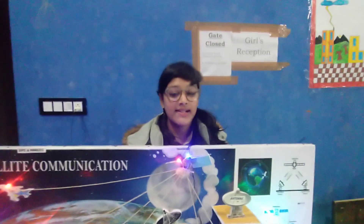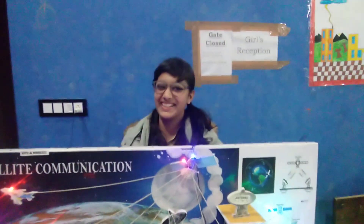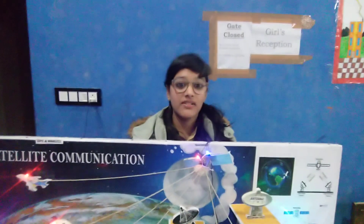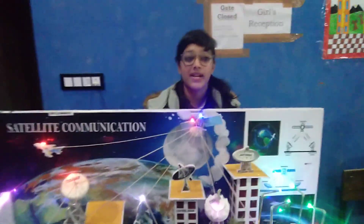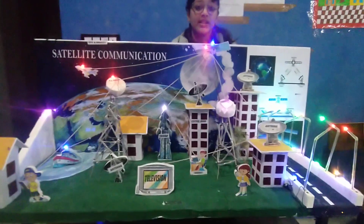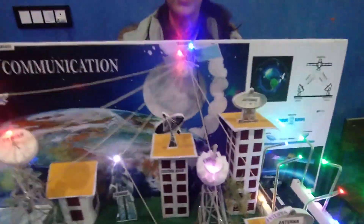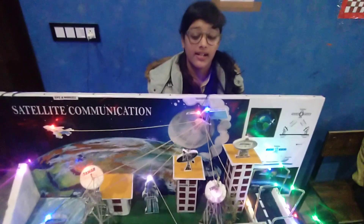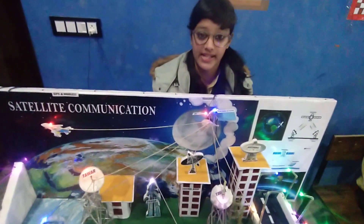A satellite is a smaller object that revolves around a larger object in space. For example, the natural satellite of Earth is the Moon, and the artificial satellites are General 1, General 2, General 3, etc.